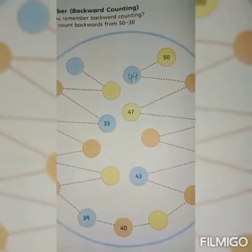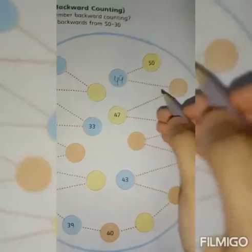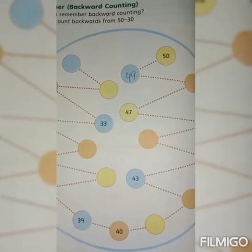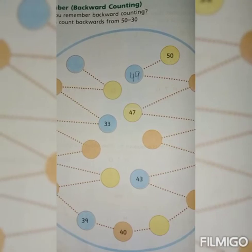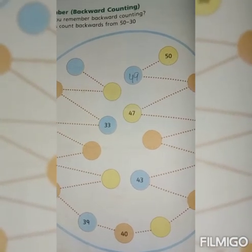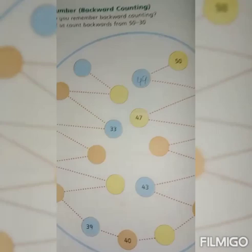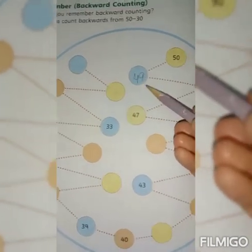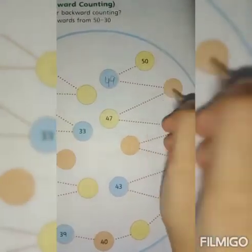Okay, we have to go backward. First, the counting we read was 1, 2, 3, 4, 5, 6, going onward. But now we will read backward counting. Look, 50. What comes before 50? 49. Like this, what comes before 49?